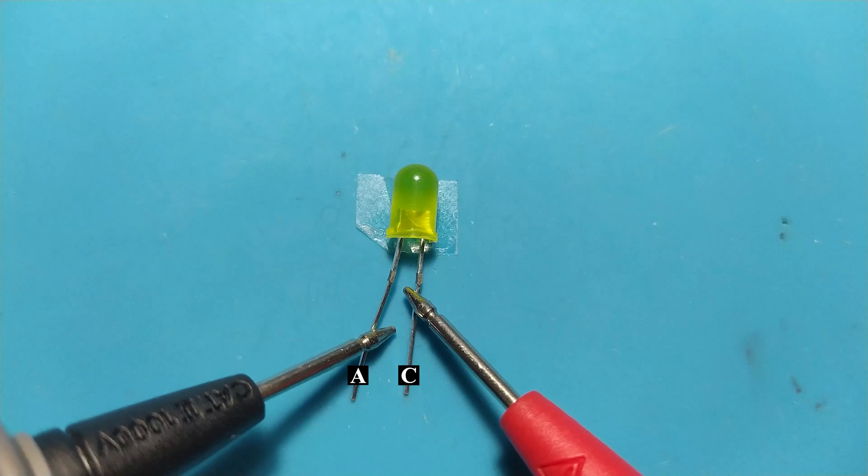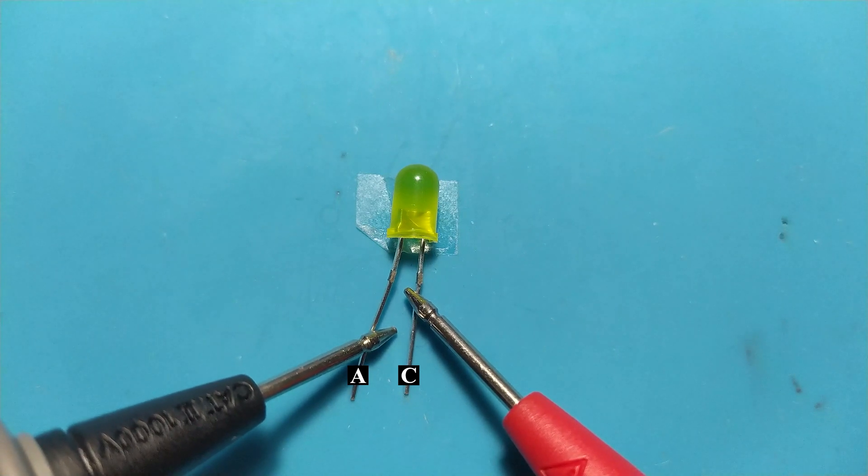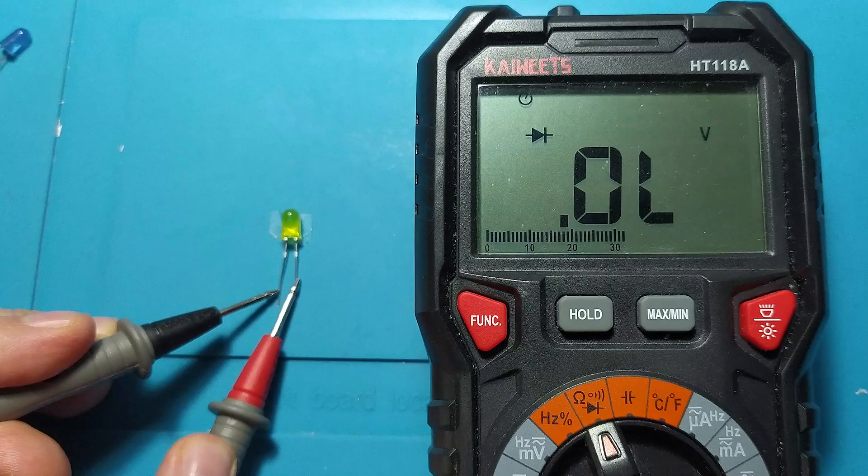With the black probe on the anode and the red probe on the cathode, the LED will remain off, and the multimeter screen will not show any voltage drop.